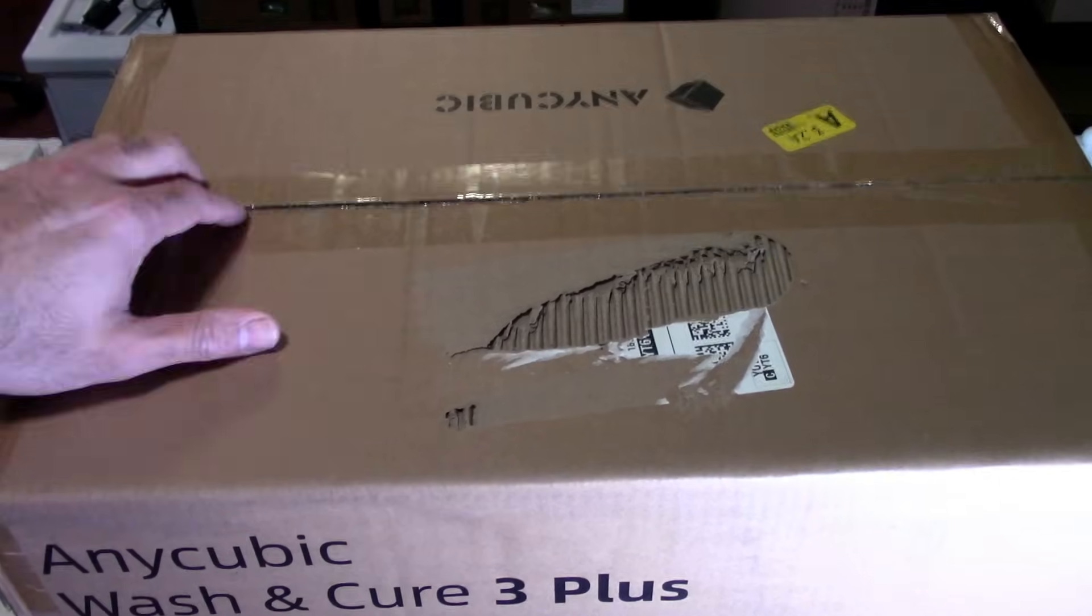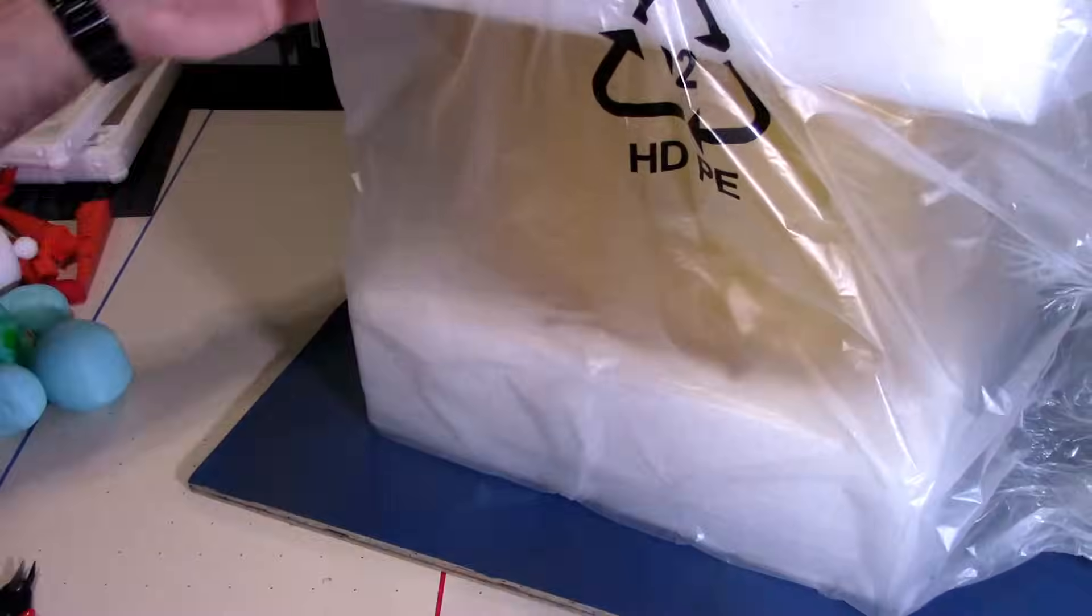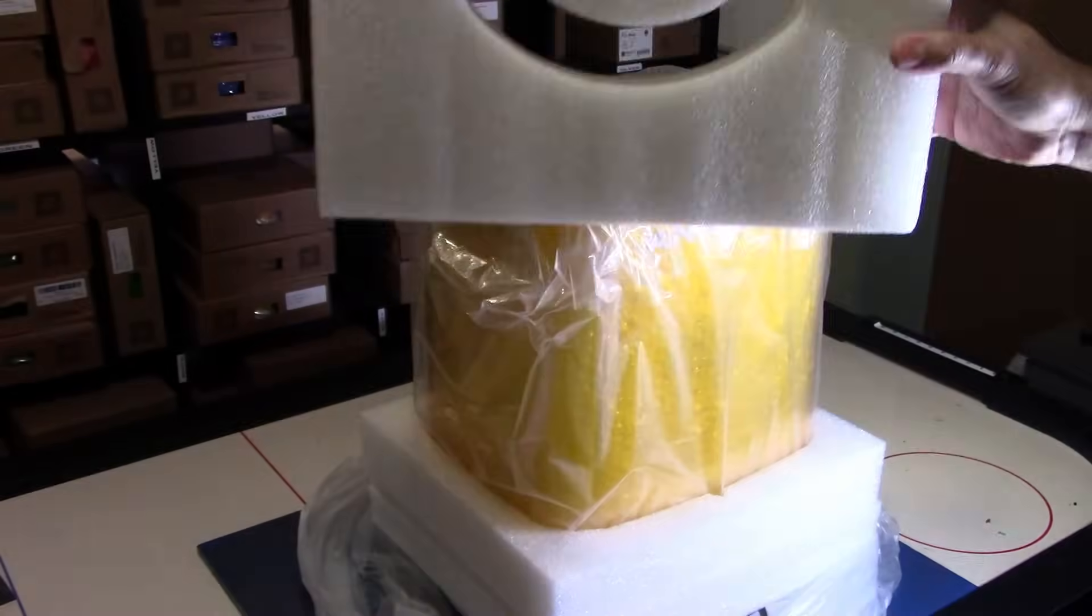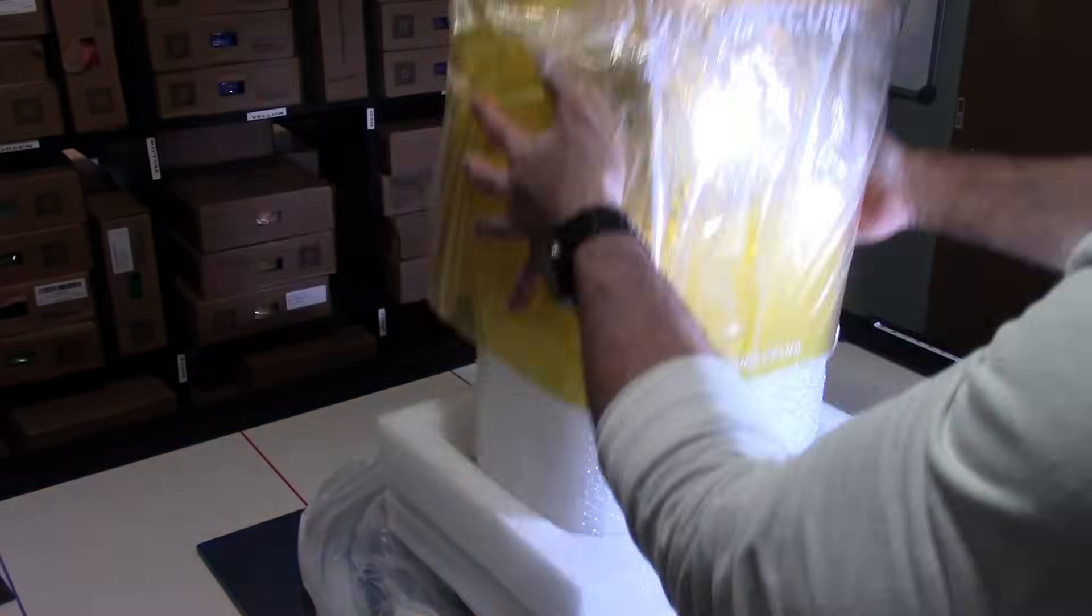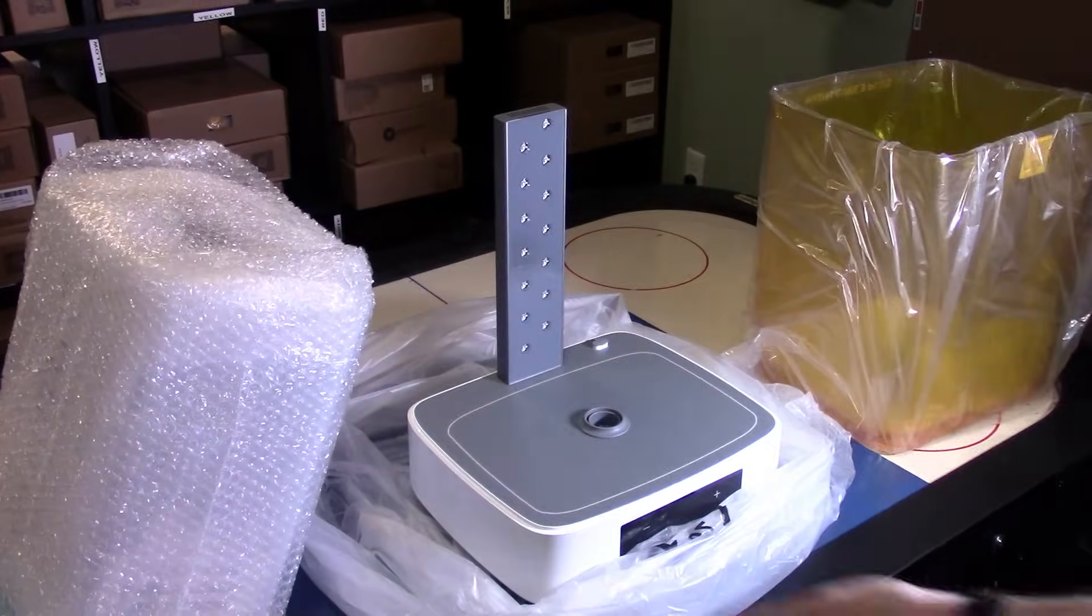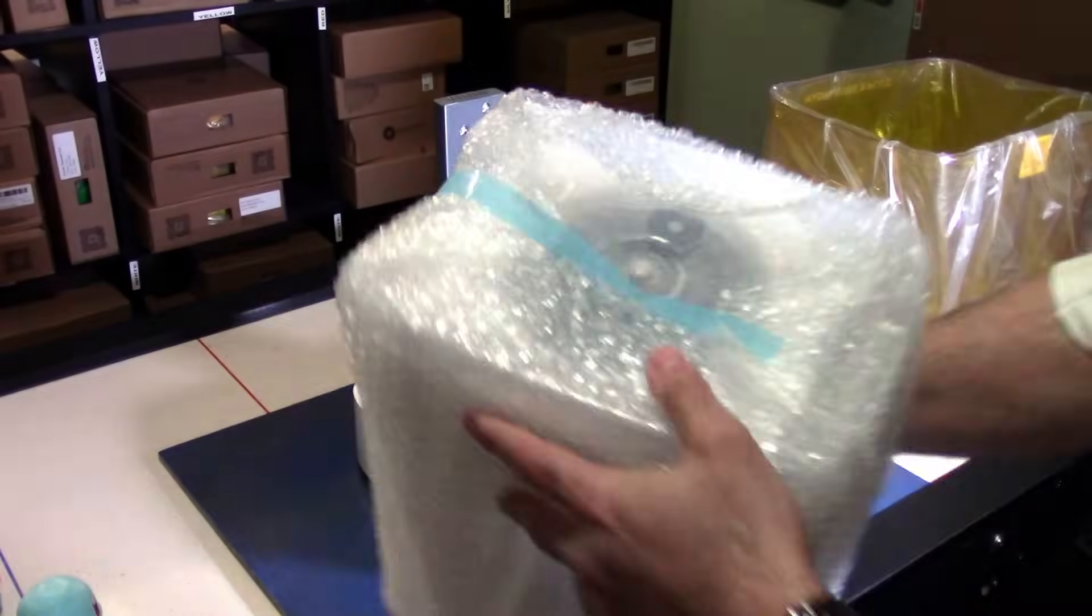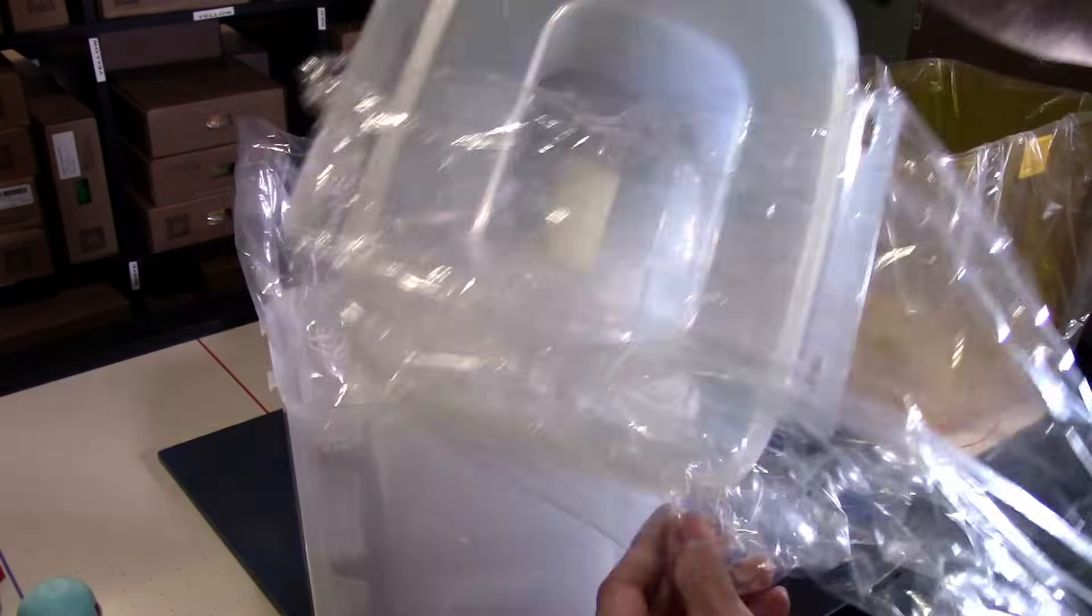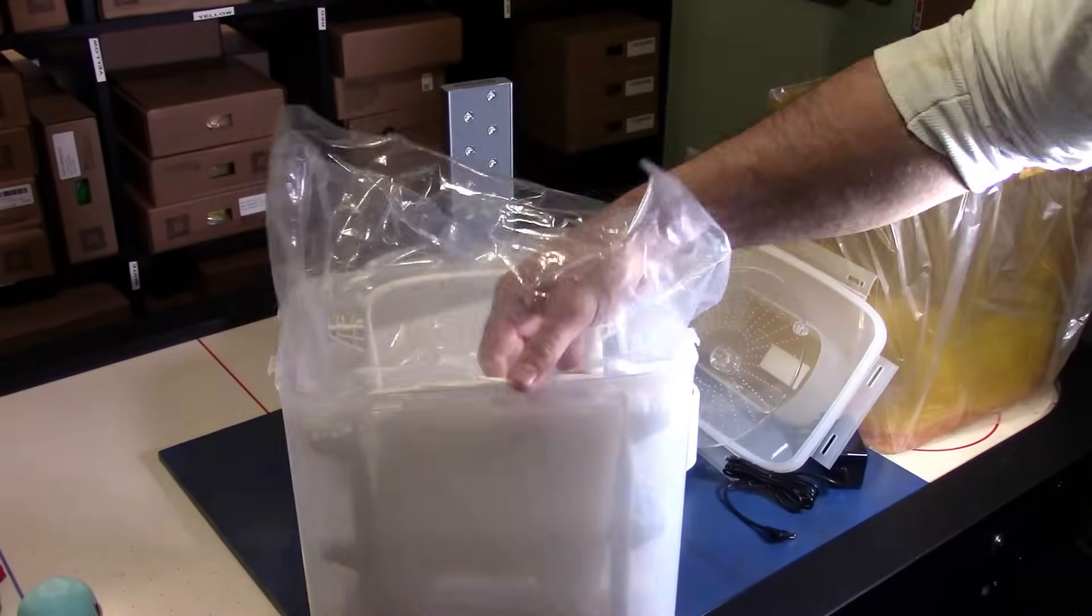The first unboxing we have here is the Wash and Cure Station 3.0 Plus. This can be purchased on sale for $225 Canadian. This version has a size increase of 13.4% which equates to 7.6 liters more for a total of 12 liters. This is specifically designed for the M5 series printers, which boast a 10.6 inch screen. The curing size has increased by 42% as well.